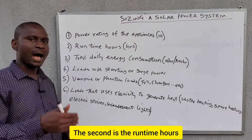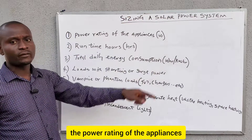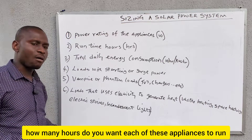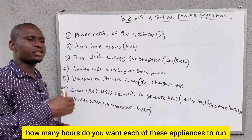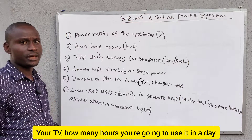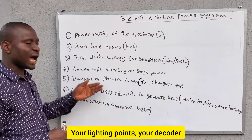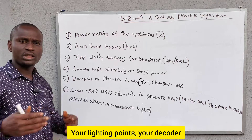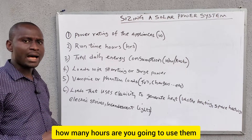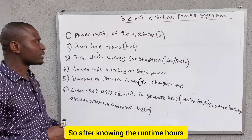The second consideration is the runtime hours. After looking at the power rating of the appliances, you ask your client how many hours they want each appliance to run — your TV, your lighting points, your decoder, your home theater, your fans — how many hours are you going to use them each day?